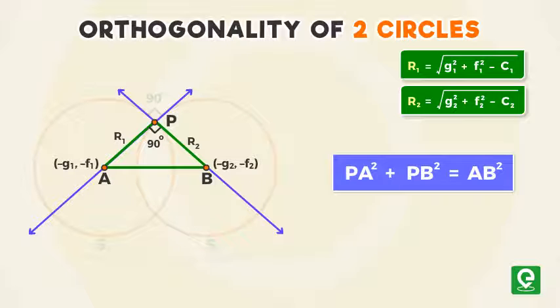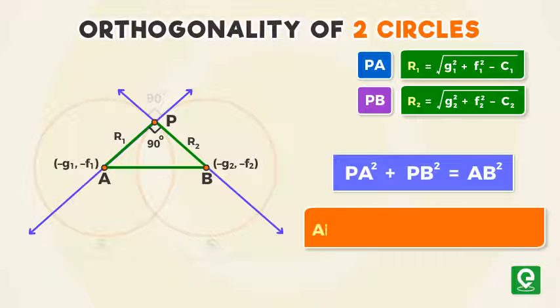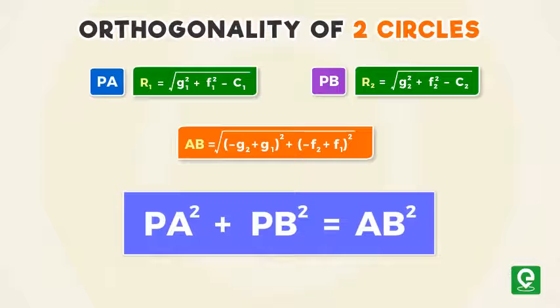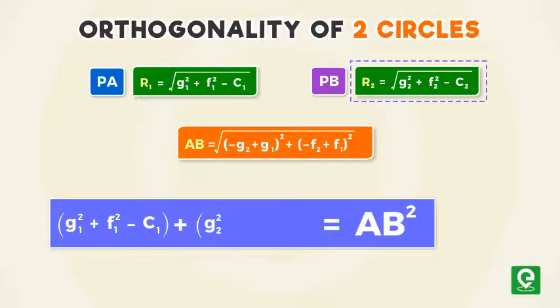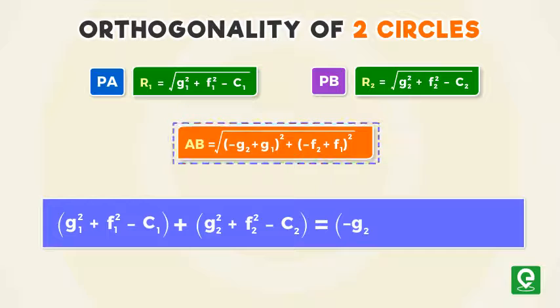From the diagram we can see that PA = r₁, PB = r₂, and AB is the distance between the two centers where AB = √[(-g₂ + g₁)² + (-f₂ + f₁)²]. Therefore putting the respective values we get g₁² + f₁² - c₁ + g₂² + f₂² - c₂ = (-g₂ + g₁)² + (-f₂ + f₁)².